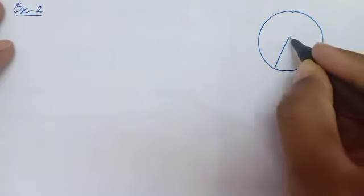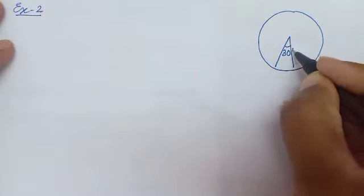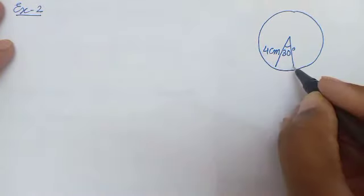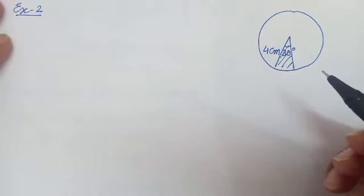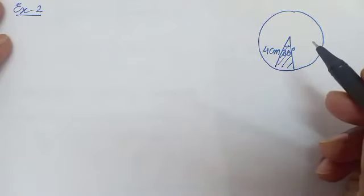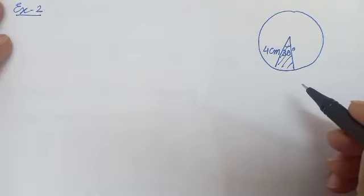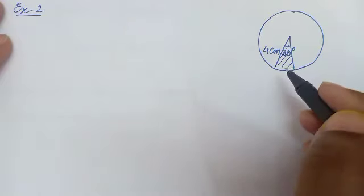Example number 2. Find the area of sector with radius 4 cm and angle 30 degree. इसका angle 30 degree हो और radius 4 cm हो तो ऐसे sector का area निकालो. Also find the area of the corresponding major sector. तो simply कहेंगे minor sector को area of sector कहते हैं और फिर जो बच गया वो corresponding major sector है।